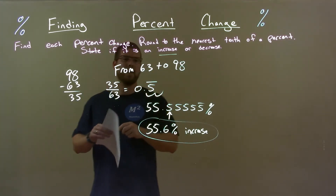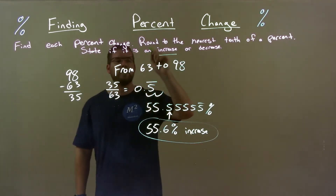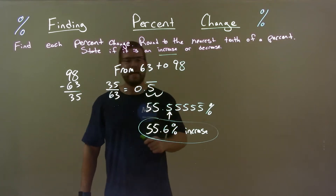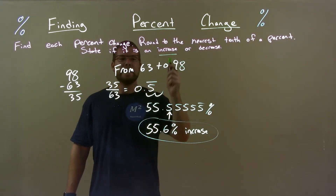Quick recap: we're given from 63 to 98, and we get to find the percent change. We find the difference between the two numbers.